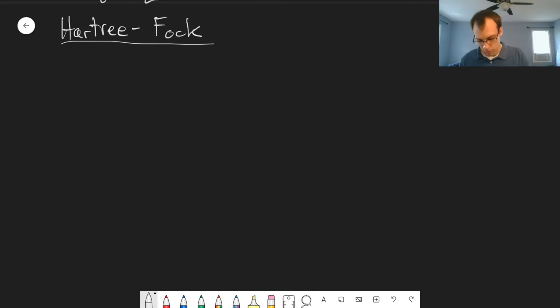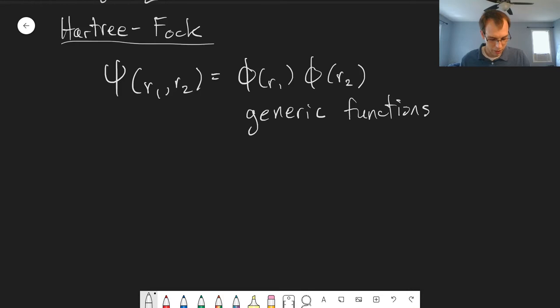So we'll say that our wave function, our trial function, is going to depend on R1 and R2. But now we don't specifically define these functions phi. They're going to be based on hydrogen wave functions, but we have sort of generic functions that we determine based on the problem. Essentially they have a lot of variational parameters, and they're going to change from problem to problem exactly what these look like.